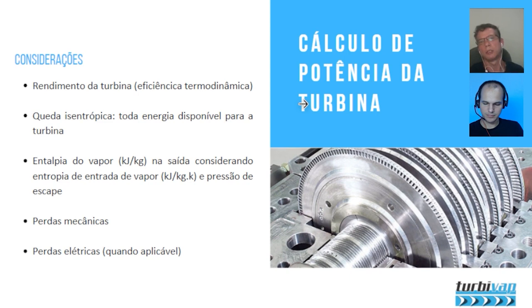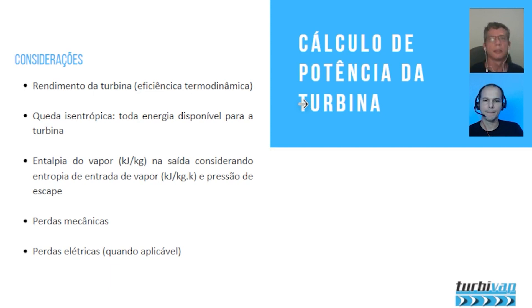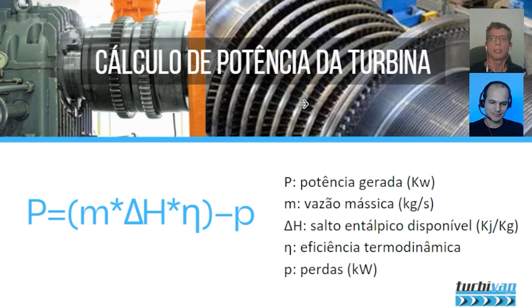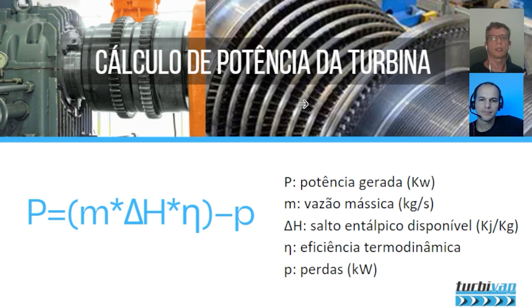To put it simply: turbine power equals the available isentropic enthalpy drop multiplied by thermodynamic efficiency, minus mechanical and electrical losses, giving the power at the turbine tip or generator terminals depending on the application. Here is a calculation example: live steam at 120 bar, 520°C, flow rate of 60 t/h; exhaust at 12 bar, 240°C. Available energy is 603 kJ/kg; real value considering temperature is 491 kJ/kg, giving thermodynamic efficiency of 81.4%. With losses estimated at 100 kW, power generated at the turbine tip is approximately 8,080 kW.